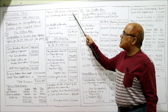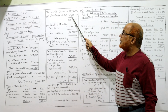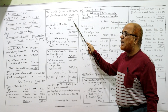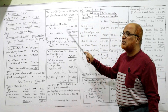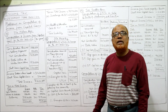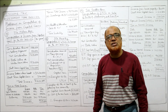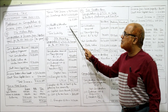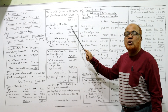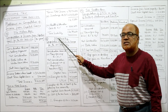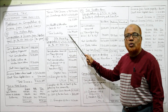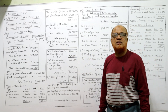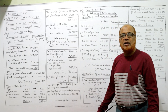25% of 92 lakh 92 thousand = 23 lakh 23 thousand. Adding up: 1 crore 16 lakh 15 thousand. To this, add health and education cess at 4% (mandatory): 4 lakh 64 thousand 600. Finally, tax liability comes to 1 crore 20 lakh 79 thousand 600.